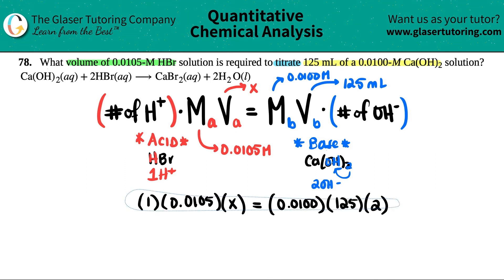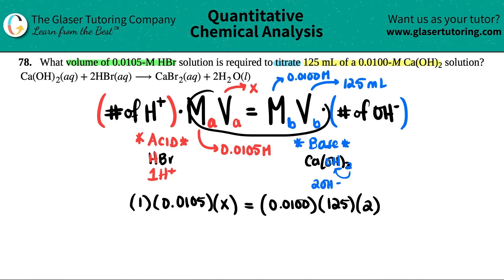Now I just want to point out here, guys, that when you're using M_A V_A equals M_B V_B, just like M₁V₁ equals M₂V₂, it does not matter if your volume is in milliliters. You can keep the mills in this equation. You don't have to convert to liters.